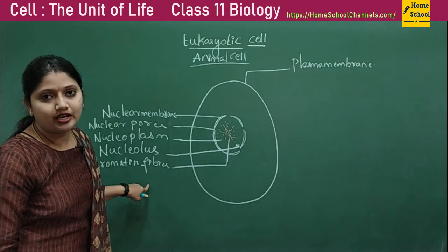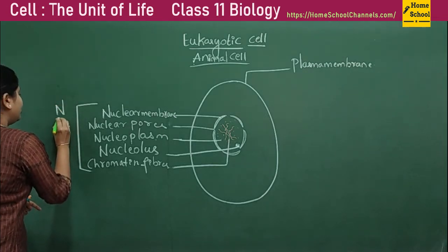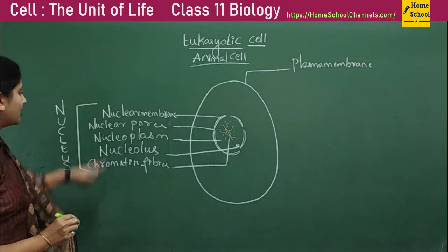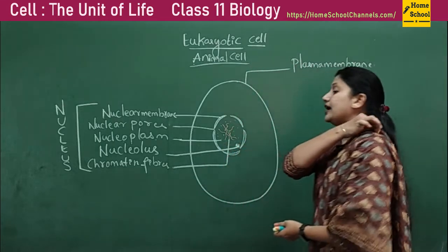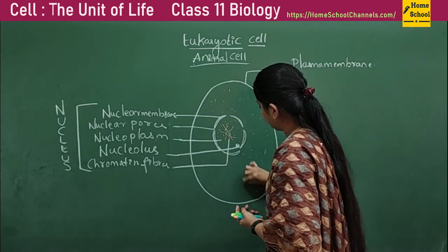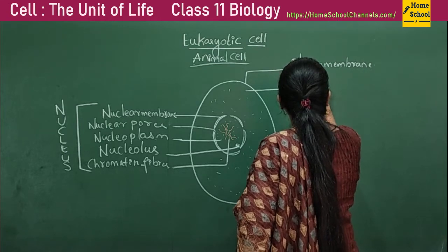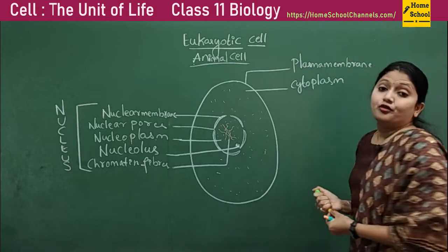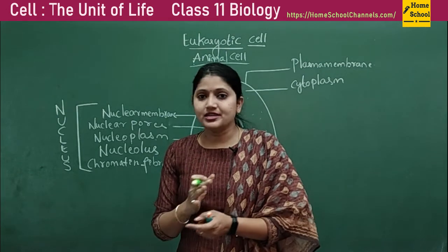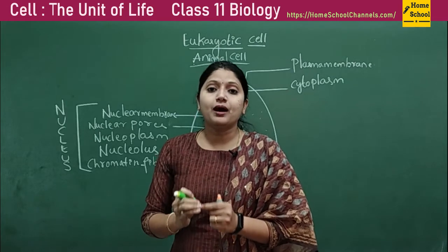The chromatin fibers are the ones which carry the genetic information. All these structures together — nuclear membrane, nuclear pores, nucleoplasm, nucleolus, and chromatin fibers — constitute the nucleus. Outside the nucleus, everything is the cytoplasm. In the cytoplasm there are many membrane-bound organelles in eukaryotes. In prokaryotes there were no membrane-bound organelles, whereas in eukaryotes there is a well-defined nucleus and all the membrane-bound organelles.